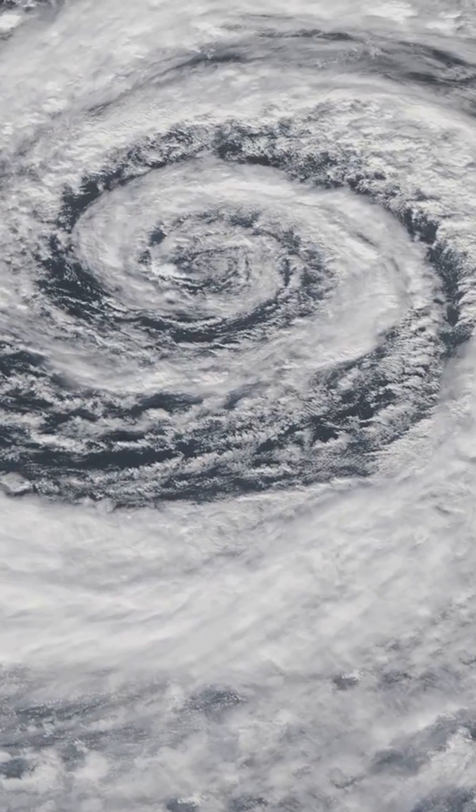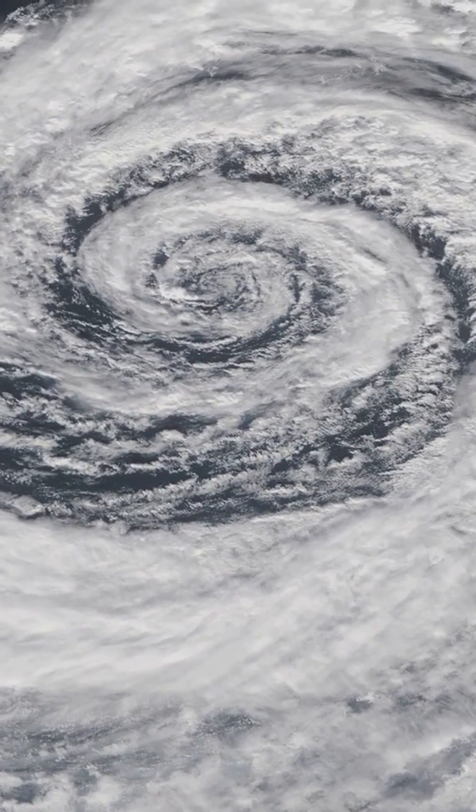And it all comes down to molecules trying to balance out. Earth's rotation also twists the wind through the Coriolis effect, causing it to curve rather than flow in a straight line.